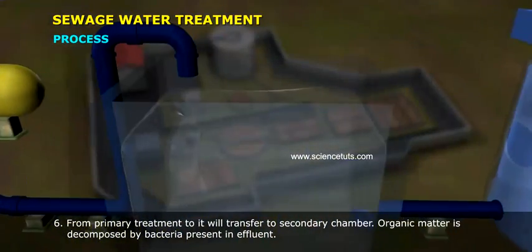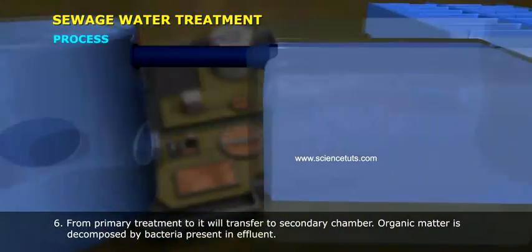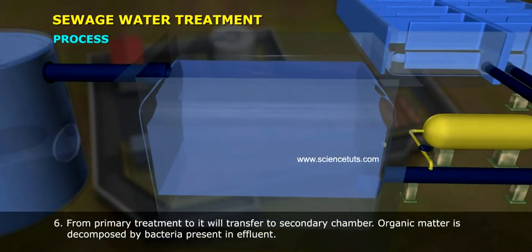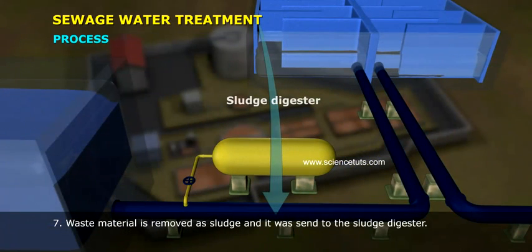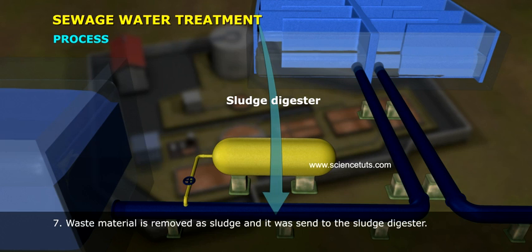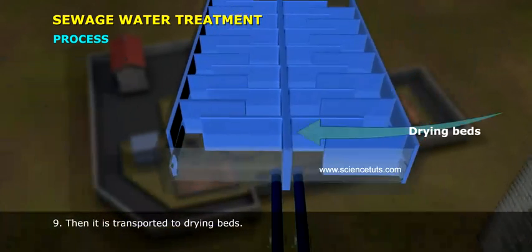Step 5: From primary treatment, water is transferred to the secondary chamber. Step 6: Organic matter is decomposed by bacteria present in the effluent. Step 7: Waste material is removed as sludge and sent to the sludge digester. Step 8: The sludge digester treats the waste by anaerobic fermentation.